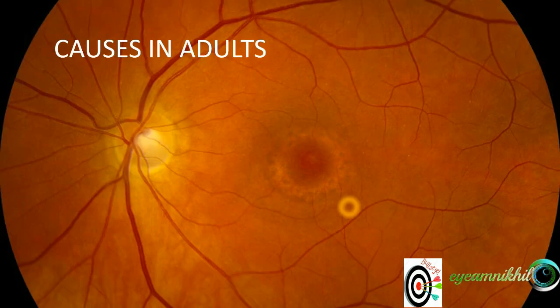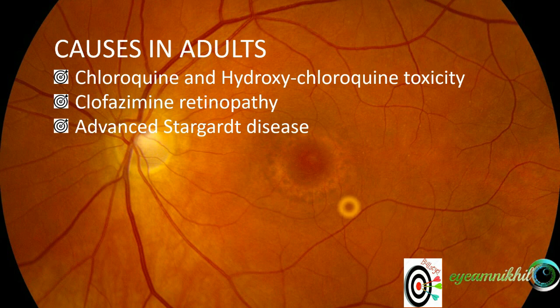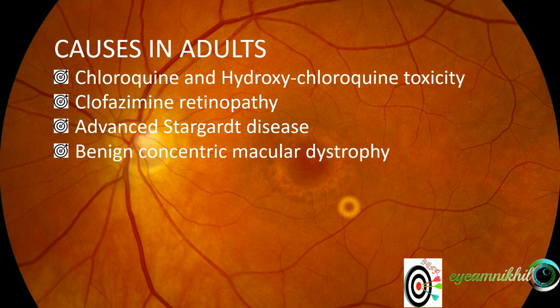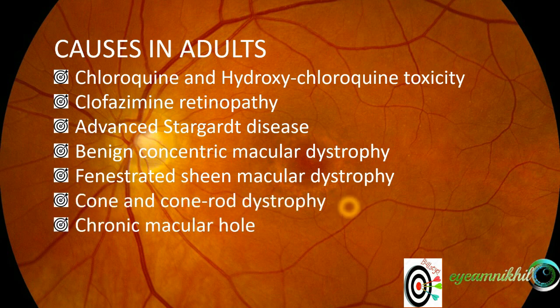Causes for this bullseye appearance in adults include chloroquine and hydroxychloroquine toxicity, clofazamine retinopathy, advanced Stargardt disease, benign concentric macular dystrophy, fenestrated sheen macular dystrophy, cone and cone-rod dystrophy, and chronic macular hole.